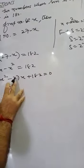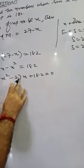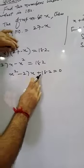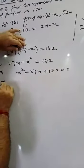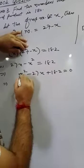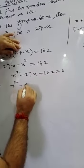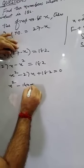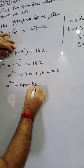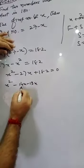Now you can split the middle term and then get it solved by factorization. We need a times c, which is 182. We split it as minus 14x minus 13x, because 14 times 13 equals 182 and 14 plus 13 equals 27.